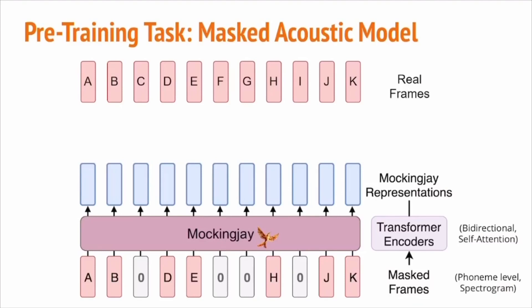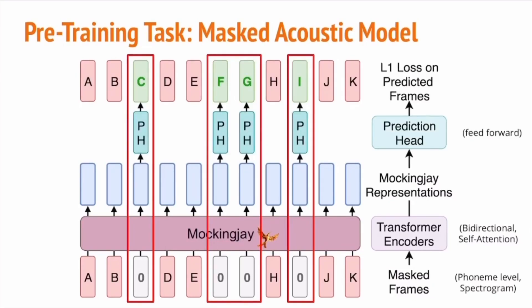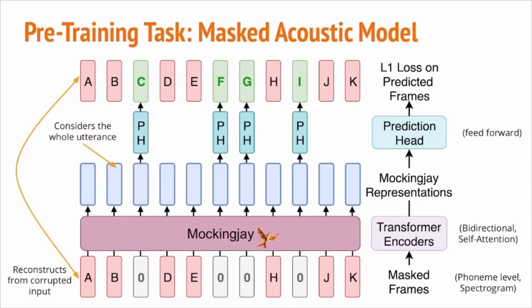The output of the last encoder layer is thus the representation we want. Note that we only ask the model to predict the masked frames, not all of the frames — we outline them in red. These representations are fed through a prediction head, and the model tries to predict the missing frames with a feed-forward network. For example, frame C is masked to zero, so the model predicts and reconstructs frame C at the output. Hence, the model tries to reconstruct real frames from corrupted input, using L1 loss to minimize reconstruction error. The idea is that if the model can predict missing frames from neighboring frames, it should provide a good bidirectional understanding of the past and future content, as the representation considers the whole utterance.